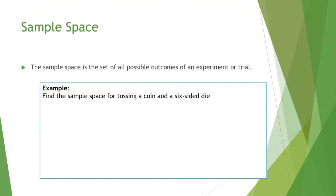I'm going to start with just the definition of sample space. The sample space is the set of all possible outcomes of an experiment or trial — just all the possible outcomes, what the results could be.